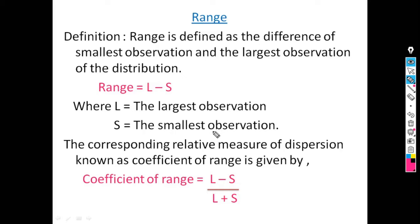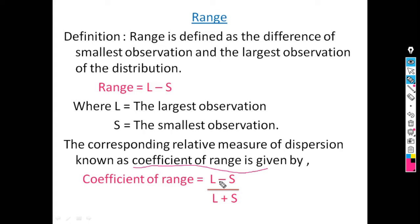Range is the most commonly used measure of dispersion used in everyday life, with the definition range equals L minus S. The corresponding relative measure of dispersion is known as the coefficient of range, defined as (L minus S) divided by (L plus S), where L is the largest observation and S is the smallest observation.